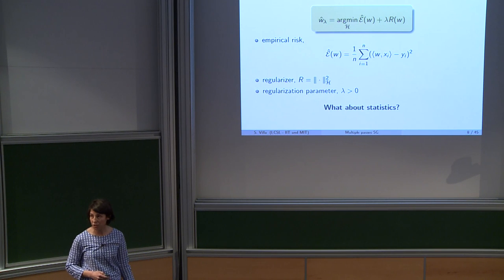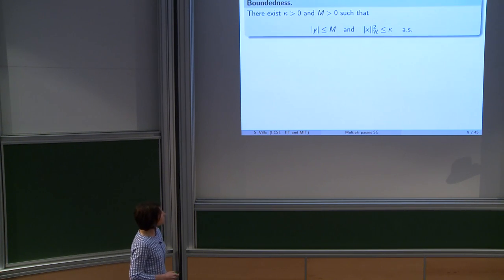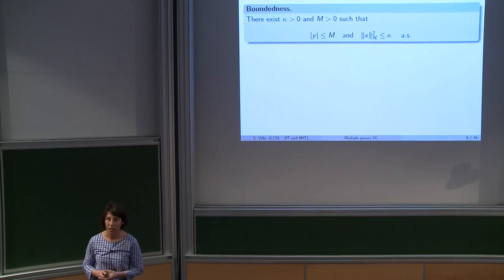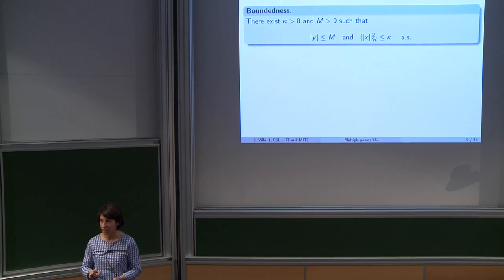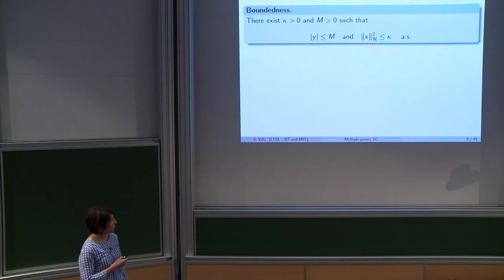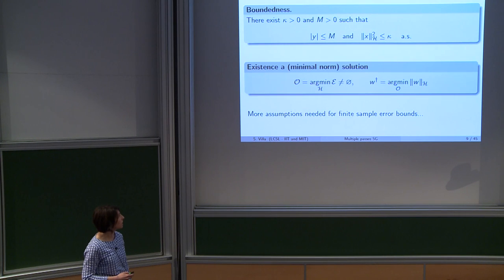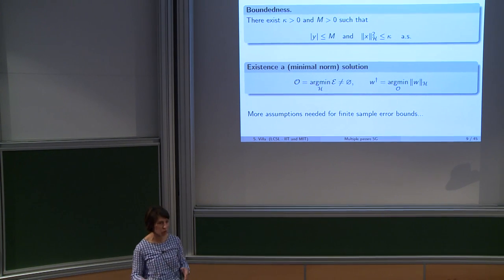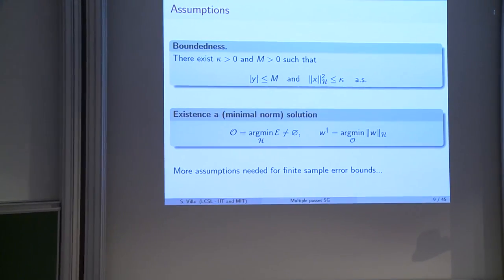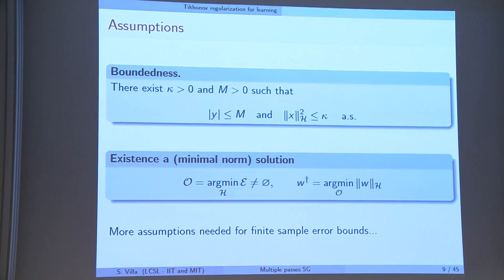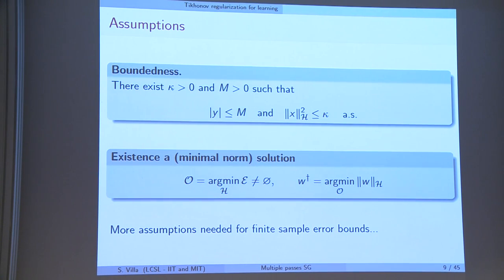To present statistical properties of this estimator, I need to introduce some assumptions. The first is fairly standard: it requires that the measure rho has bounded support, so the norm of my input points x is bounded almost surely, and the same holds for the output y. Another assumption is that the risk has a minimizer; since it has at least one minimizer, the set of minimizers is not empty and we can consider the minimal norm solution. This is a less standard assumption.